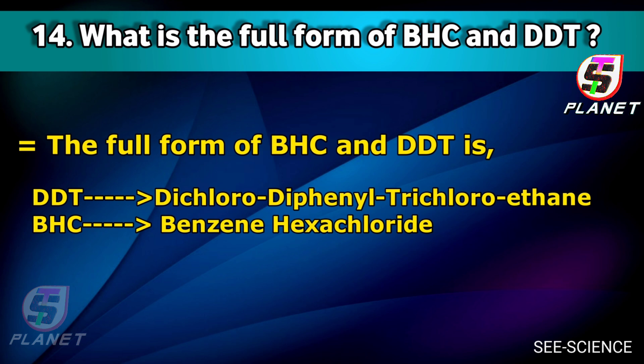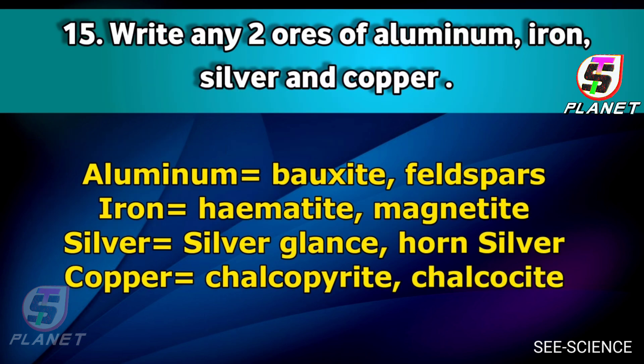Question number fifteen: Write any two ores of aluminium, iron, silver, and copper. Answer: Aluminium's two ores are bauxite and feldspar. Iron's two ores are hematite and magnetite.